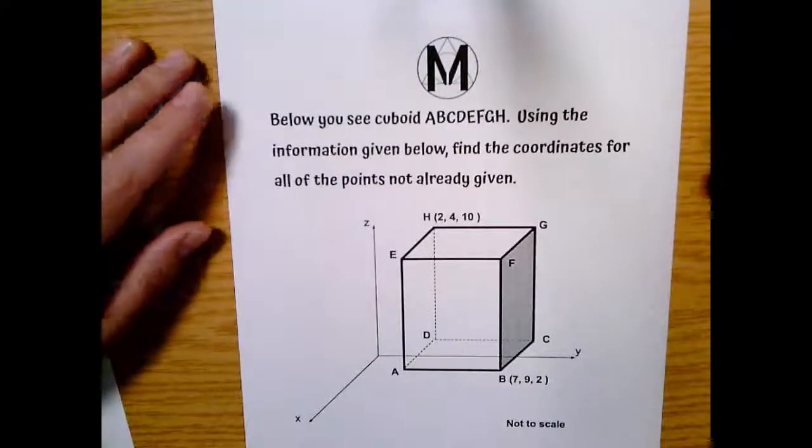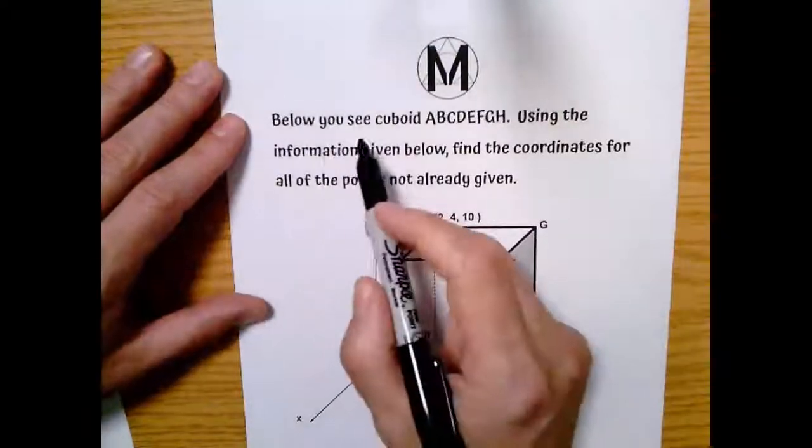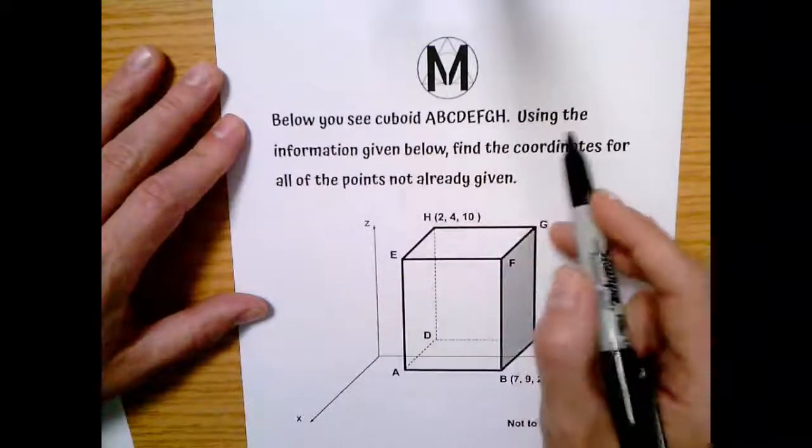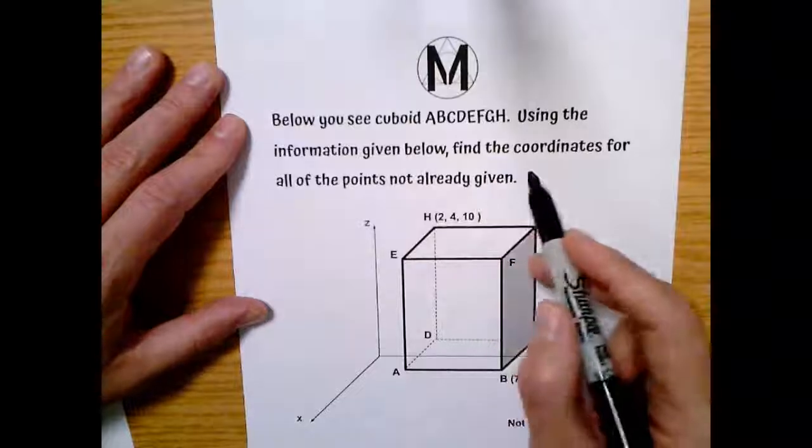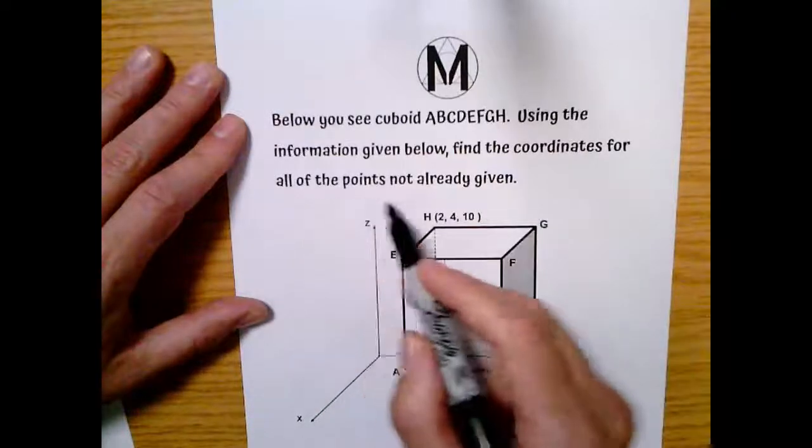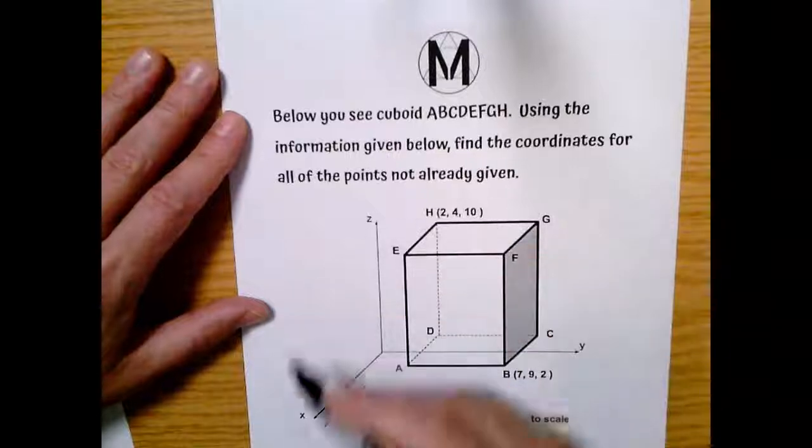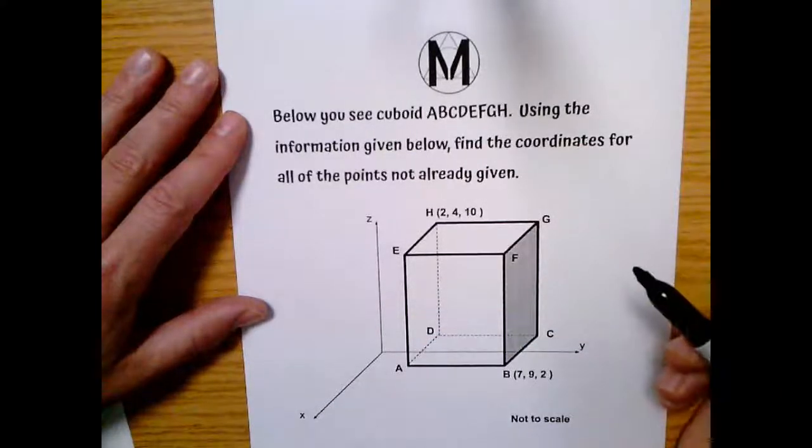All right, let's do some mathy-math. It says here, below you see cuboid ABCDEFGH. Using the information given below, find the coordinates for all of the points not already given. Okay, we can handle that, and they've given us this lovely diagram to work with.